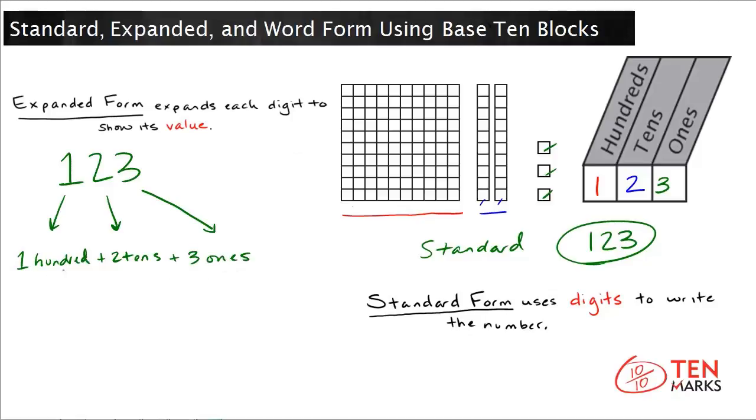So now you have an expanded form that says 100 plus two tens plus three ones. You can also write the expanded form by using the associated value with each place value. So you know the hundreds place is associated with the number 100. The tens is 10, and the ones is one.